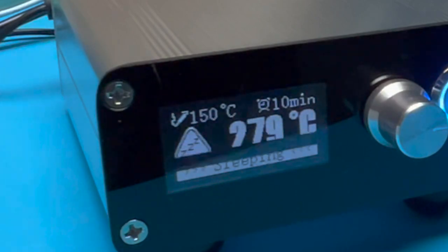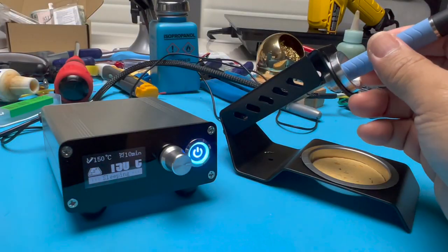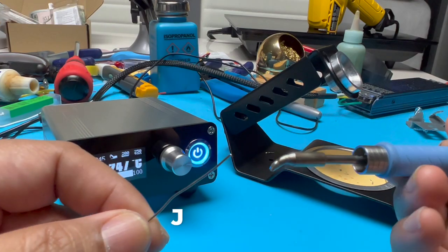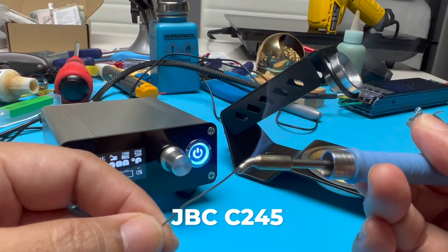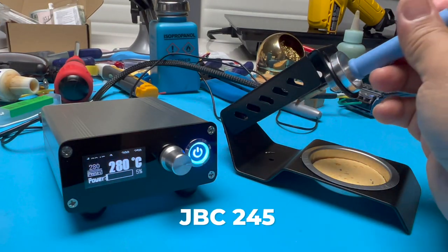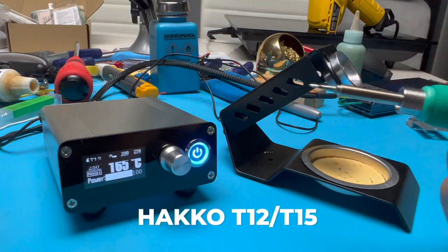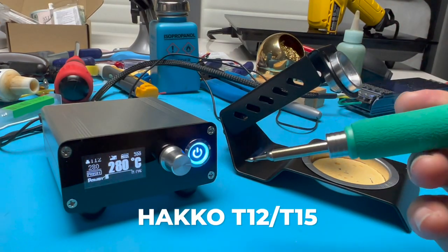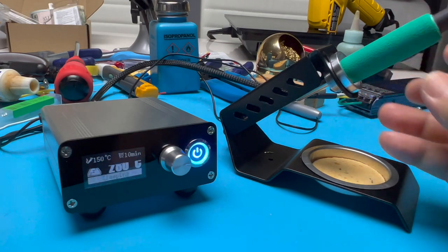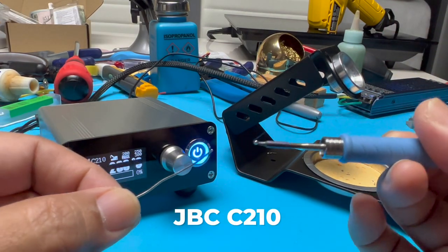Another great feature is that this station supports four different tips. It supports JBC C245, Hakko T12 or T15, JBC C210, or Hakko T18 or 936 clones.